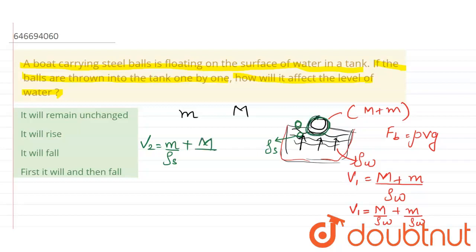...the boat is still there, so it is the mass of one ball and the boat, that is M upon rho w. This is also calculated. This is our volume 2.